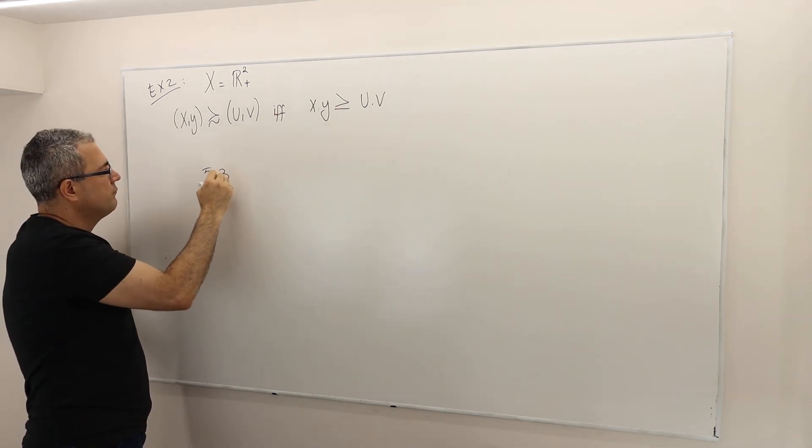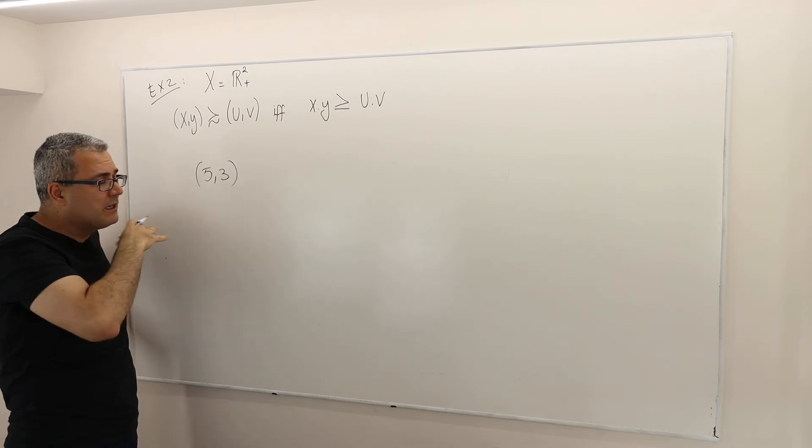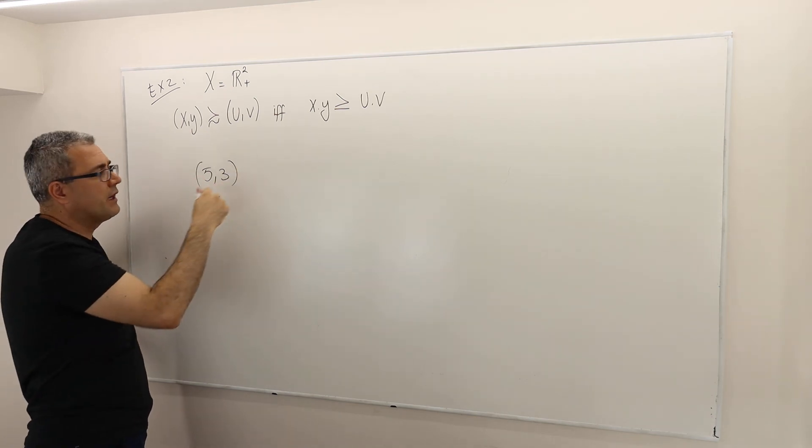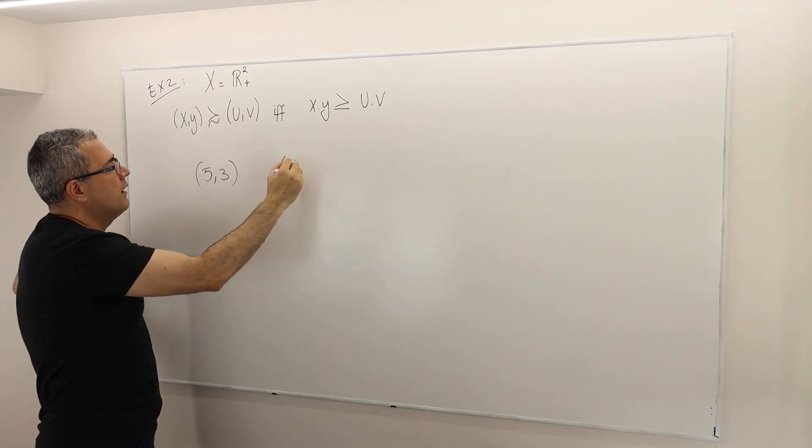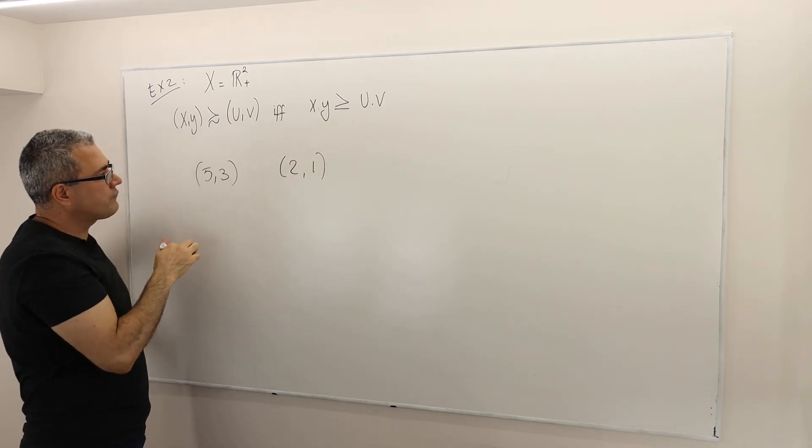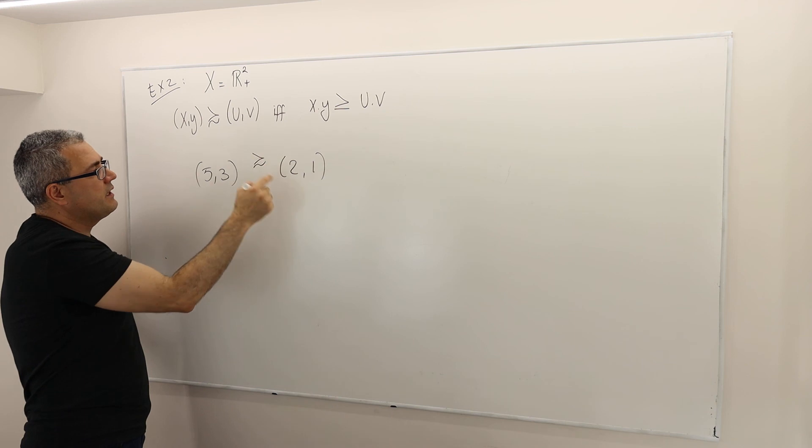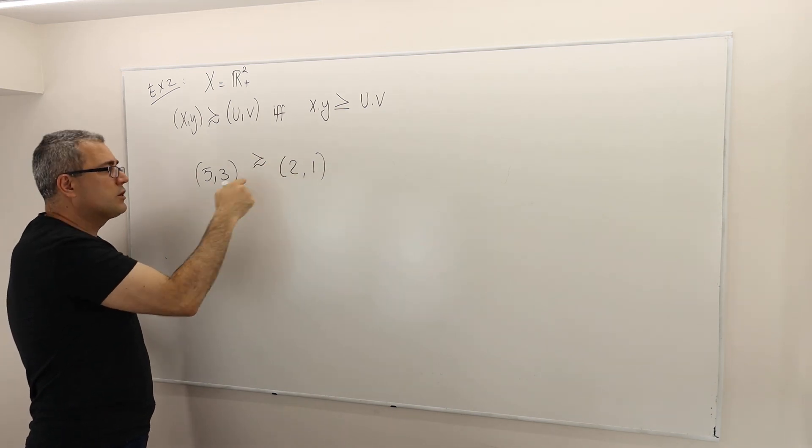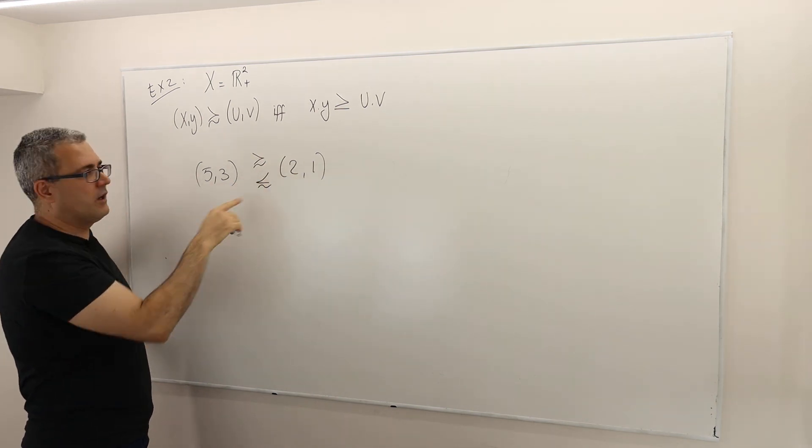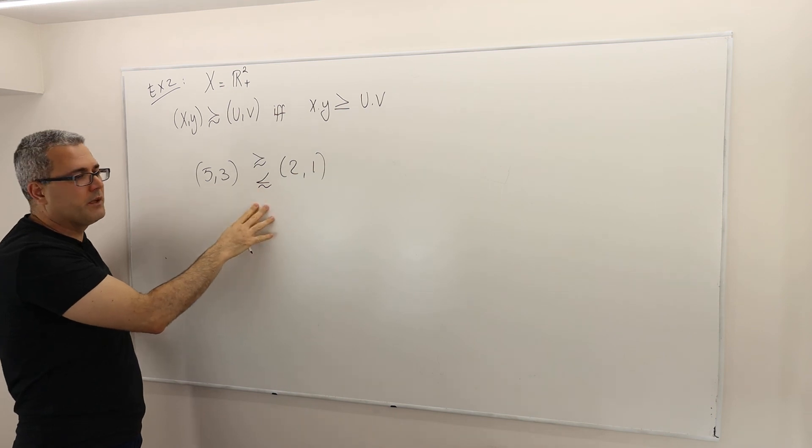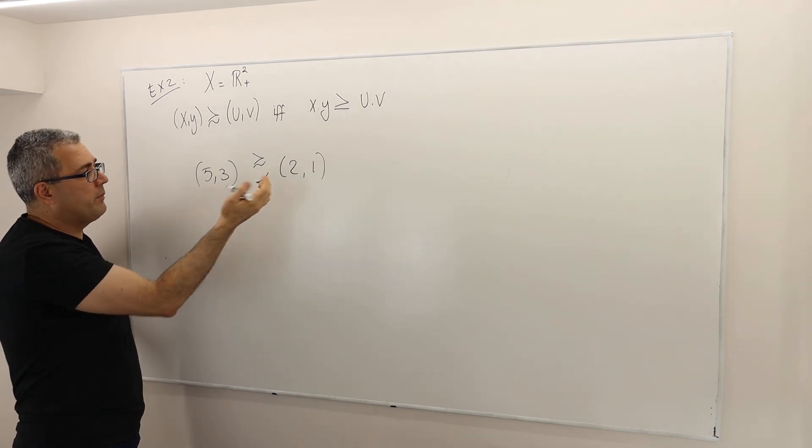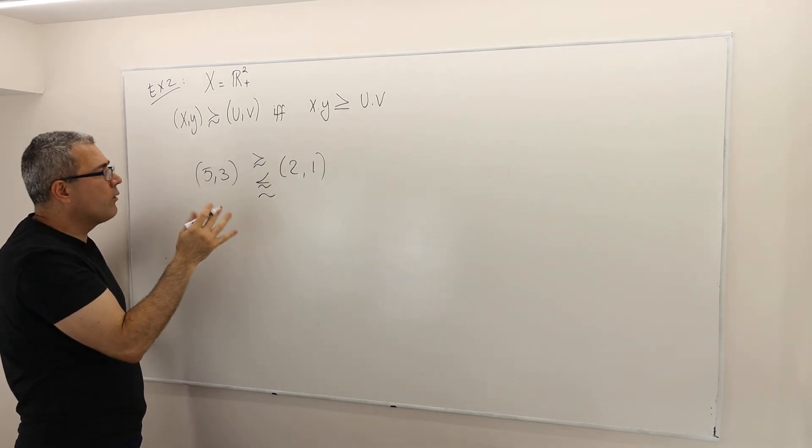For example, (5,3), I am completely making up the numbers, they're coming out of nowhere. So, two vectors. Can I say this one is at least as good as the other, or this one is at least as good as the other? I'm going to write it this way, sort of in the mirror image. Or maybe they're indifferent. I don't know. Let's see.